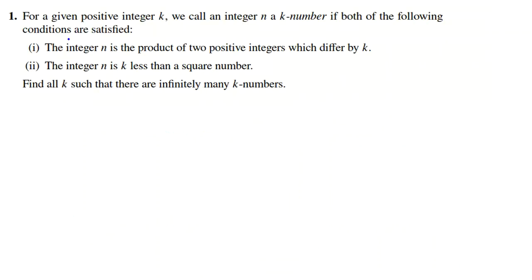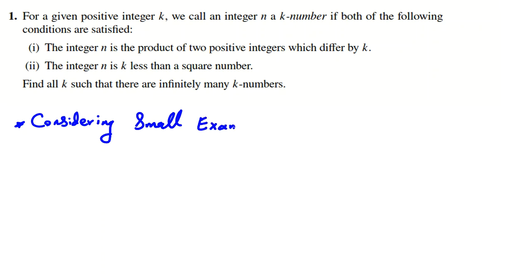For understanding the problem better, let's consider small examples. The idea we want to use — especially in BMO — is considering small examples or small cases. It has different aspects. For example, in some problems like this we consider small k. Sometimes, like when we have f of f of f of something, we consider f of x first, then two f's, then three f's. So let's read.